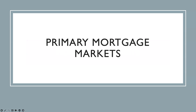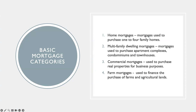So under the primary mortgage markets, there are four basic mortgage categories. First, we have home mortgages — basically these are the home loans. These are mortgages used to purchase one to four family homes. Second, we have the multifamily dwelling mortgages. By the term itself, this particular type of mortgage is used to purchase apartment complexes, condominiums, and townhouses. Third, we have commercial mortgages, and these are mortgages used to purchase real property for business purposes such as office buildings and factories.